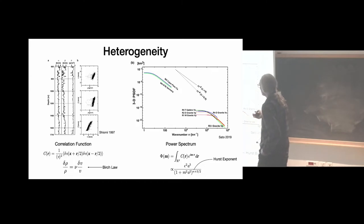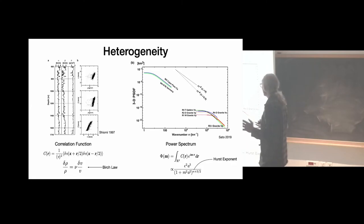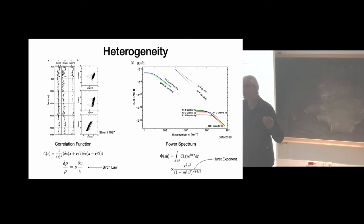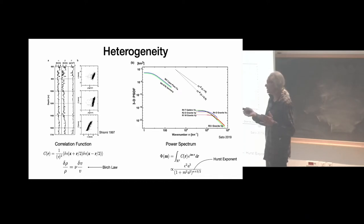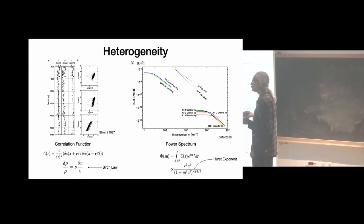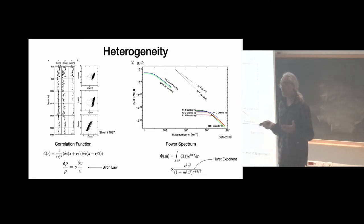In borehole data you see that the correlation length depends on the size of the sample you examine — different correlation lengths at different scales. This means the correlation length is not necessarily a well-defined quantity; it depends on how you sample the medium. The lesson is that we have heterogeneities at all scales, well described by a simple power-law spectrum. I attach a lot of importance to the slope of the power spectrum rather than the correlation length itself.